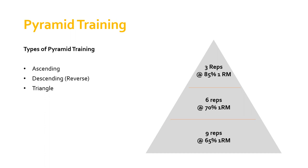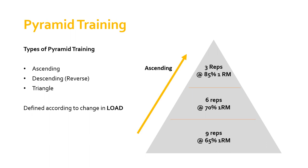Each type is determined by what's happening to the load as we progress from set to set. The type of pyramid training is defined according to the change in load. For example, if we start at the bottom of the pyramid — doing nine reps at 65 percent of one rep max — take a break of three to four minutes (a decent long break, because we want to work on strength, not muscular endurance) — and then the load for our next set is increasing, then we are doing an ascending pyramid. If the load is going up from set to set, we are doing an ascending pyramid.